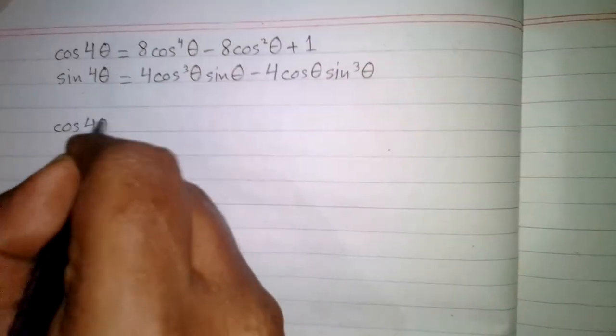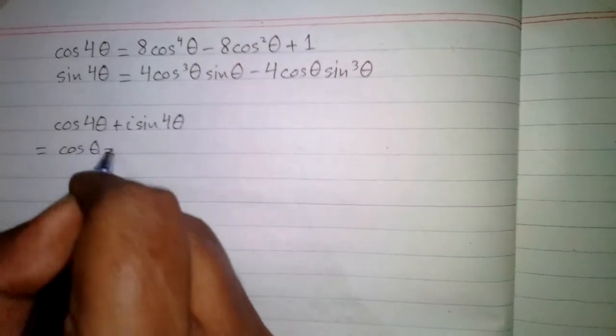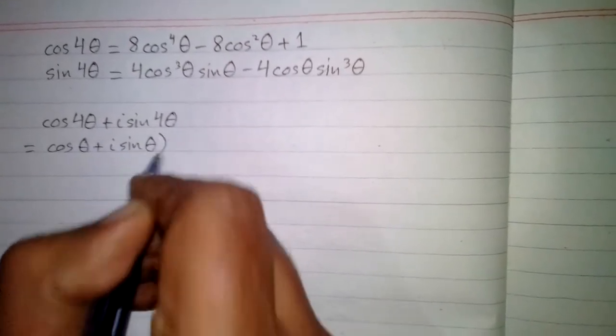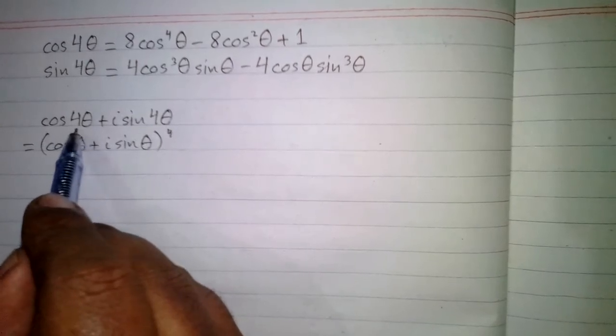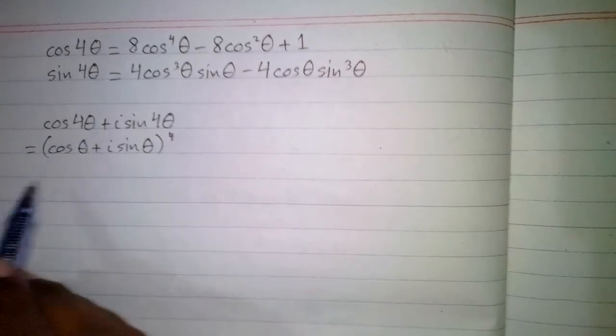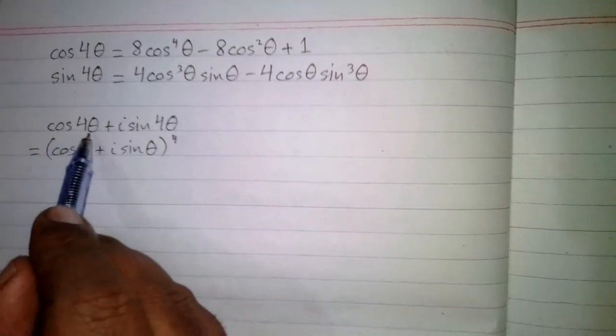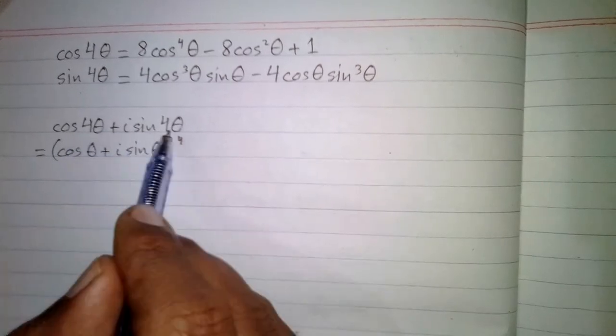First of all, we can write cos4θ plus iota·sin4θ as (cosθ + iota·sinθ) raised to the power 4, by De Moivre's theorem. We can make the multiple of the angle the power of cosθ + iota·sinθ. Here the coefficient of θ is 4, so 4 becomes the power.